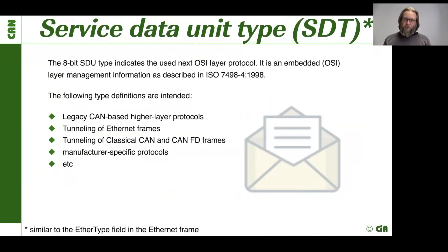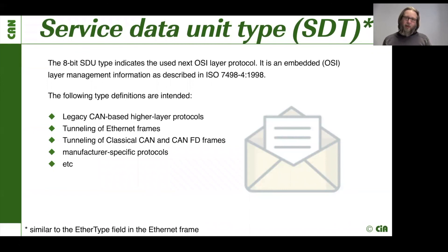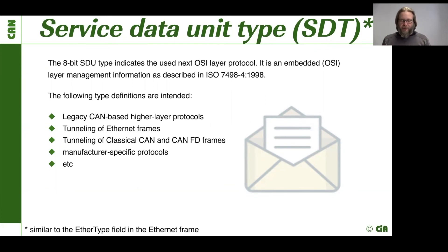The SDU type specification is finished and just needs to be published — it allows us to directly identify the data being transmitted within a CAN-XL frame. We have the possibility to directly tunnel or map legacy higher layer protocols — legacy 11-bit classical CAN frames, CAN-FD frames, and 29-bit CAN frames onto the CAN-XL network. That allows a direct tunneling of the existing solutions, making integration much easier. And of course, it also allows tunneling of Ethernet frames, so even here we have direct integration much more easily.